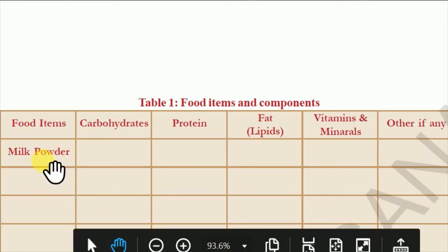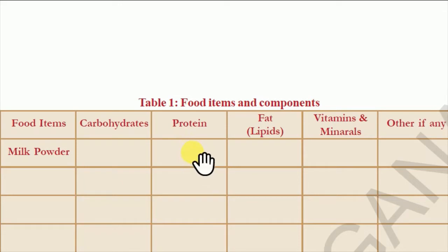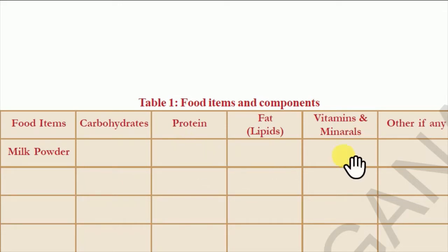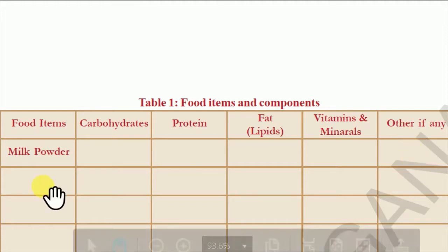The first food item you will write here is milk or milk powder. Carbohydrates are present — yes. Protein is present — yes. Fats are present — yes. Vitamins are present — yes. Minerals are present — yes. And under 'other,' you write that it is rich in nutrients.